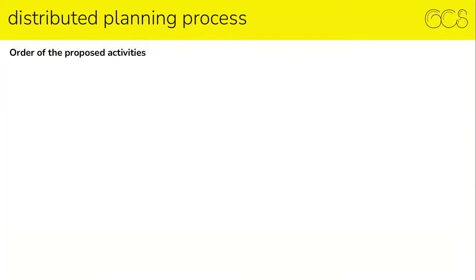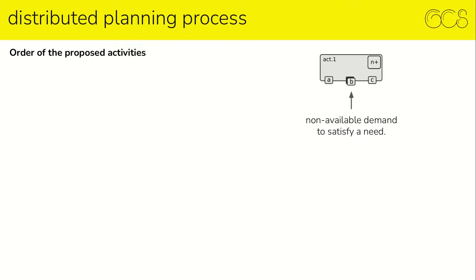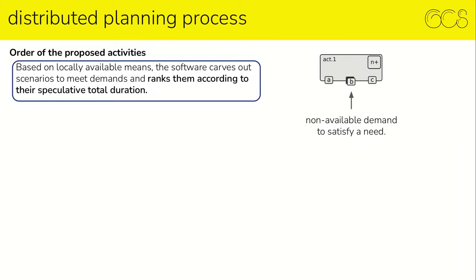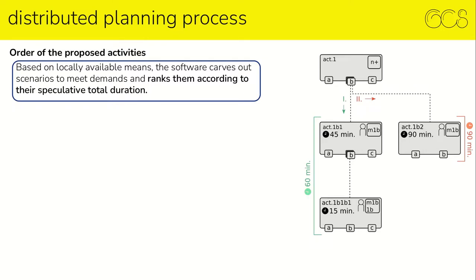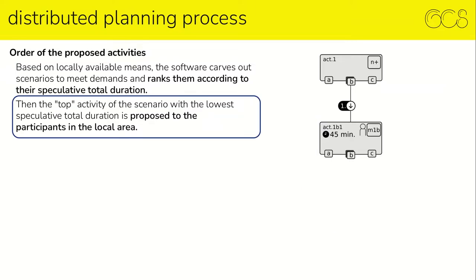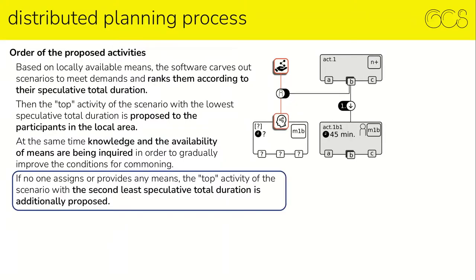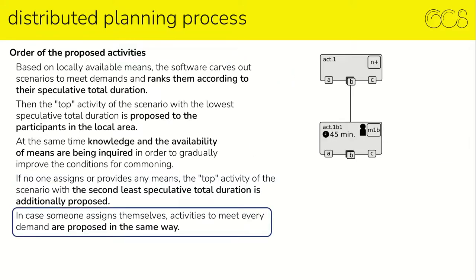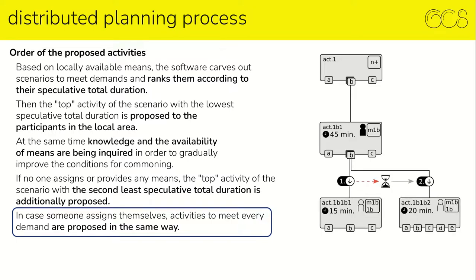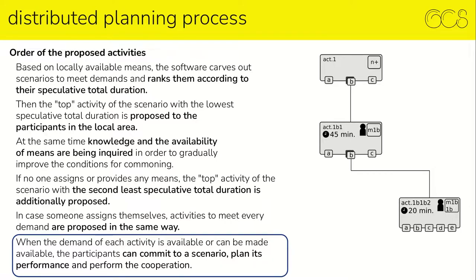This brings us to the order of proposed activities. Based on locally available means, the software carves out scenarios to meet demands and ranks them according to their speculative total duration. The top activity of the scenario with the lowest speculative total duration is proposed to participants in the local area. Knowledge and availability of means are inquired to gradually improve conditions for commoning. If no one assigns themselves or provides a means, the top activity of the scenario with the second-least speculative total duration is additionally proposed. If someone assigns themselves, activities to meet every demand are proposed in the same way, until participants can commit to a scenario, plan its performance, and perform the cooperation.